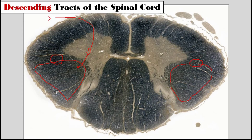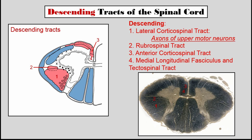Next is the anterior corticospinal tract, located in the anterior region. And lastly, the medial longitudinal fasciculus and tectospinal tract. The medial longitudinal fasciculus is not really considered a descending tract, but it overlaps with tectospinal fibers which are traveling down the spinal cord. This drawing reviews what we've talked about. You can see the four major descending tracts: one, lateral corticospinal; two, rubrospinal; three, anterior corticospinal; and four, medial longitudinal fasciculus — with the tectospinal tract within it as well.